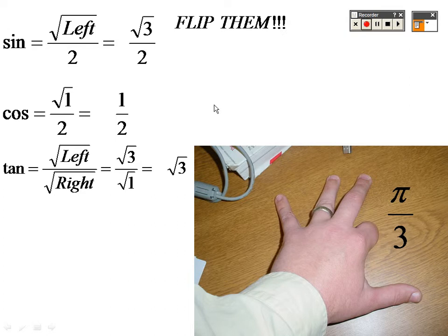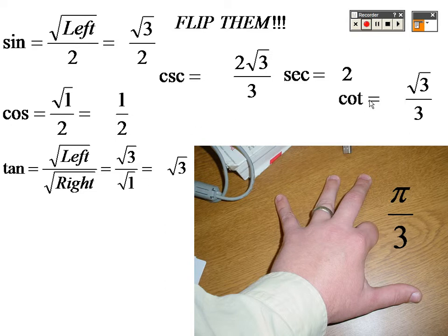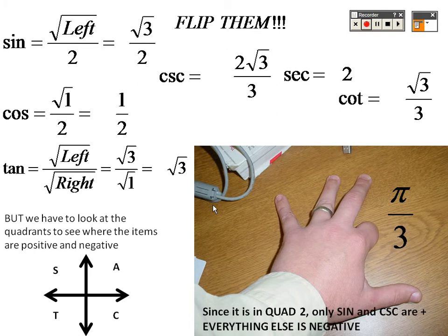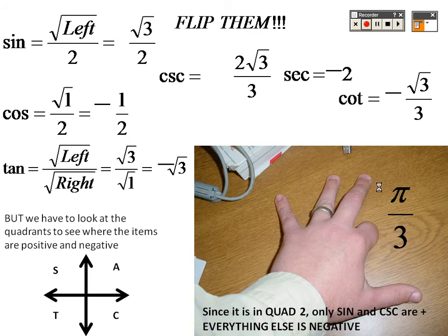To find the rest, you just flip them: cosecant is 2√3/3, secant is 2, and cotangent is √3/3. But we were in quadrant 2, and in quadrant 2 only sine is positive — so sine and cosecant are positive, but everything else is negative: cosine, secant, tangent, and cotangent.